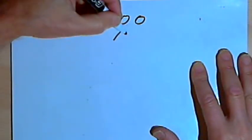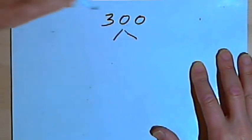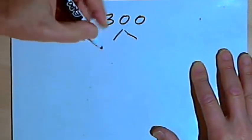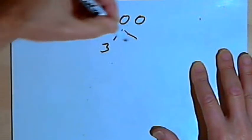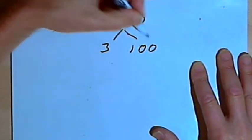So underneath that 300 I'm gonna make two branches, that's why we call this a factorization tree. At the end of one of the branches I'll write the 3, and at the end of the other branch I'll write 100.